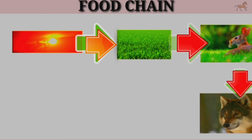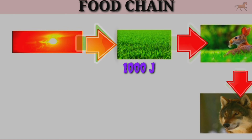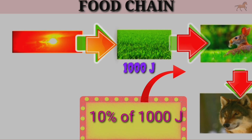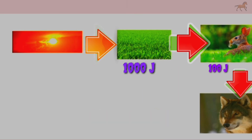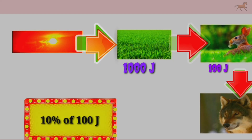Let us assume that almost 1000 Joules of energy is available at trophic level 1. Then, 100 Joules of energy would be available at trophic level 2. We can also calculate the amount of energy available at each trophic level with the help of this 10% law.